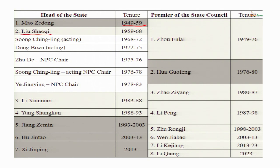Liu Shaoqi was removed during the Cultural Revolution — beaten up, tortured, denied medication, and he died. He was attacked by the Red Guards, young students who attacked him, and he eventually died. After his death, the chairman was not replaced.